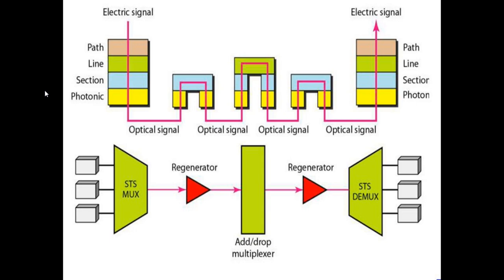Here we can see the diagram. An electric signal passes from the source through four layers: path, line, section, and photonic. It goes through the optical fiber, converts to an optical signal, and finally we get an electric signal at the output. It has an STS MUX, regenerators, an add-and-drop multiplexer, and the final stage consists of a DMUX to convert the output into a human-recognizable form.